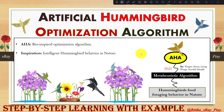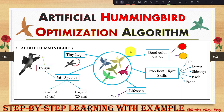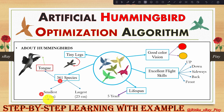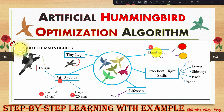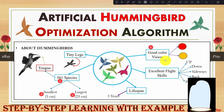Since this algorithm is inspired by the hummingbird's behavior, we will first understand hummingbird biology. There are more than 361 species of hummingbirds, making it the second largest family of birds. The smallest species is about 5 centimeters and the largest about 23 centimeters. The hummingbird brain is 42% of its body weight. Hummingbirds have good color vision and are attracted to bright colors like red and orange. They have no sense of smell but can hear better than humans.